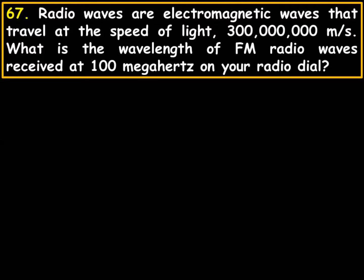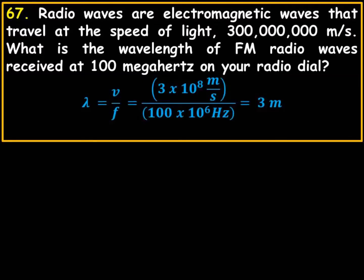So now all I have to do is find the wavelength by applying the very basic equation that we've seen before, and that is wavelength equals velocity over frequency, which equals 3 times 10 to the 8th meters per second, which is the velocity, divided by 100 megahertz, 100 times 10 to the 6th hertz.